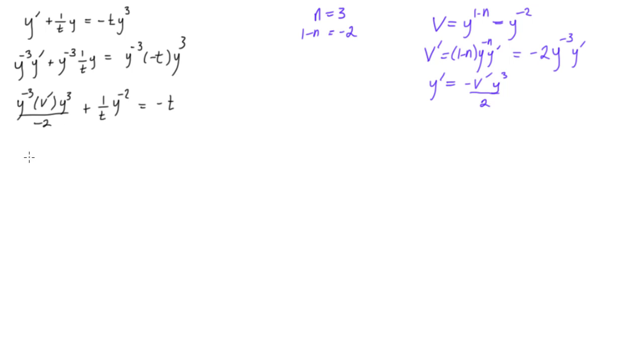So we can simplify this a little more, the y's will cancel out here as well. We'll be left with v prime over negative 2 plus 1 over t. Now we had y to the power of negative 2, y to the power of negative 2 is the same thing as v, as we've called it. So we can say that's v, is equal to negative t.